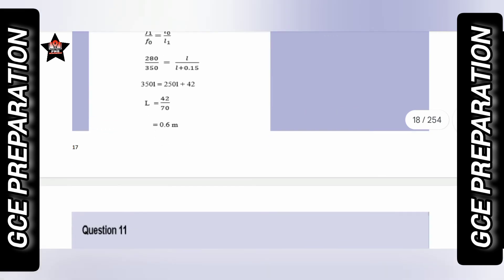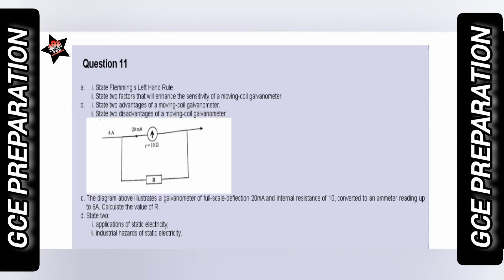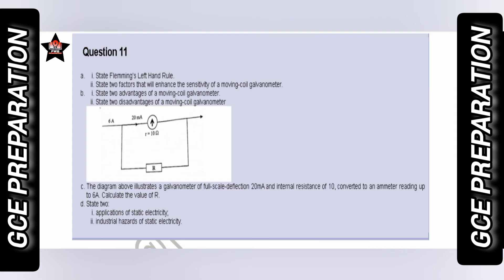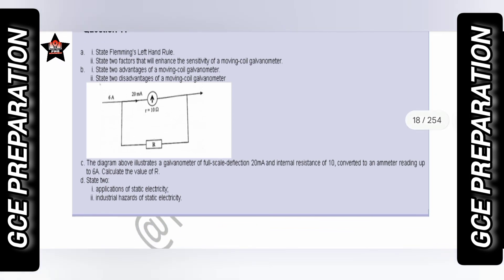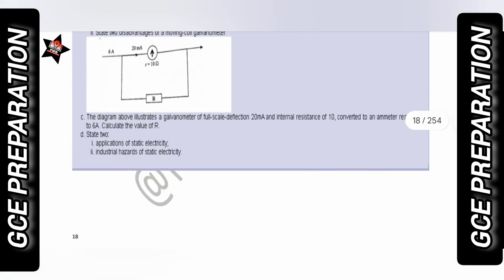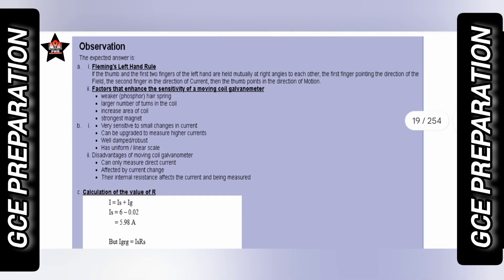The solutions are provided right here — very, very simple. Question number eleven is from electromagnetism and electricity. The questions you can expect include: questions from Ohm's law, simple AC circuits, electromagnetism, Faraday's laws of electrolysis, Coulomb's law, and electrostatics. These are the questions that form question number eleven. Prepare yourself to answer this question using the precise wording the examiner expects.